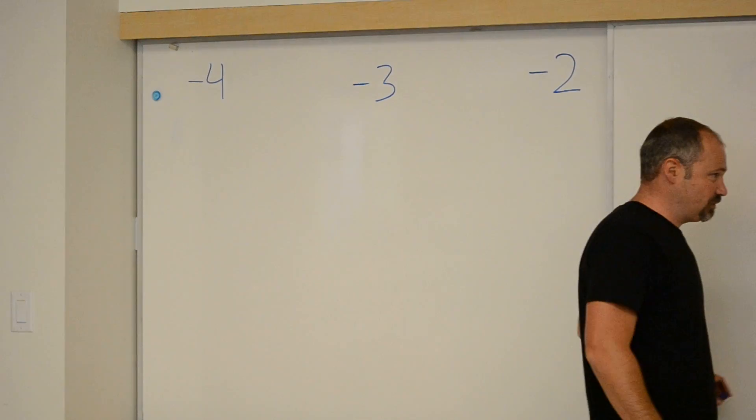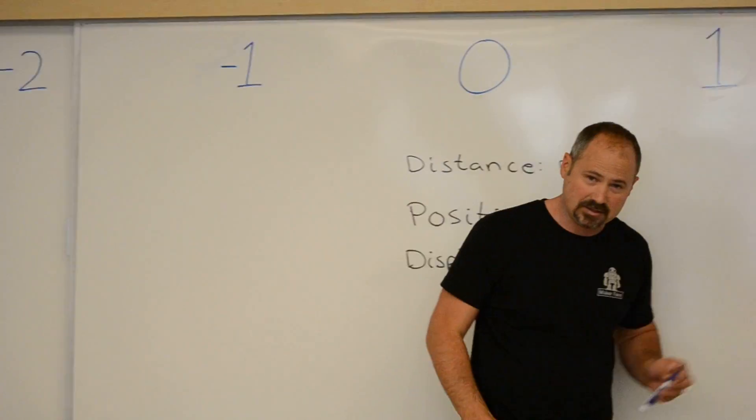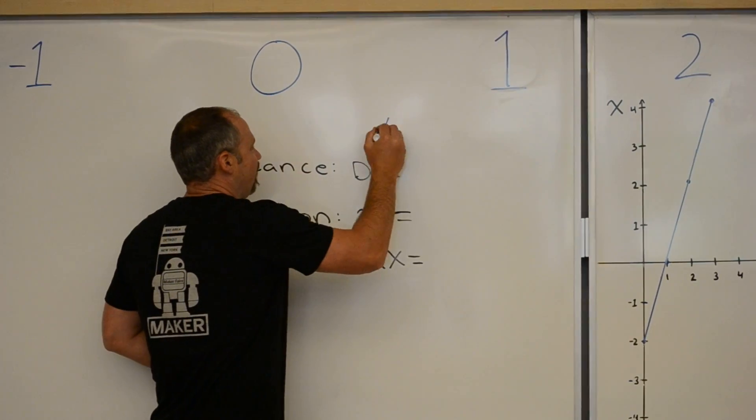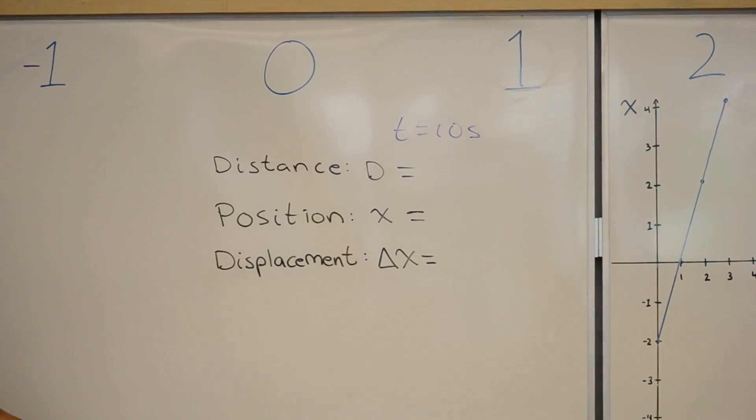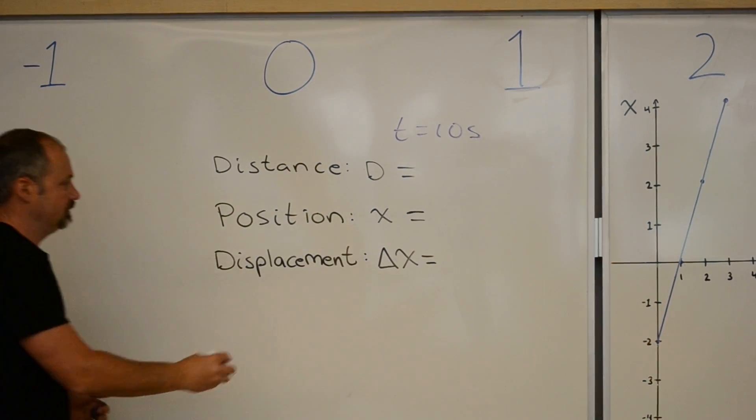Let's summarize what's going on at 10 seconds, and then let's finish the graph. At time 10 seconds, let's start with the easy thing: position. I'm at negative 4.